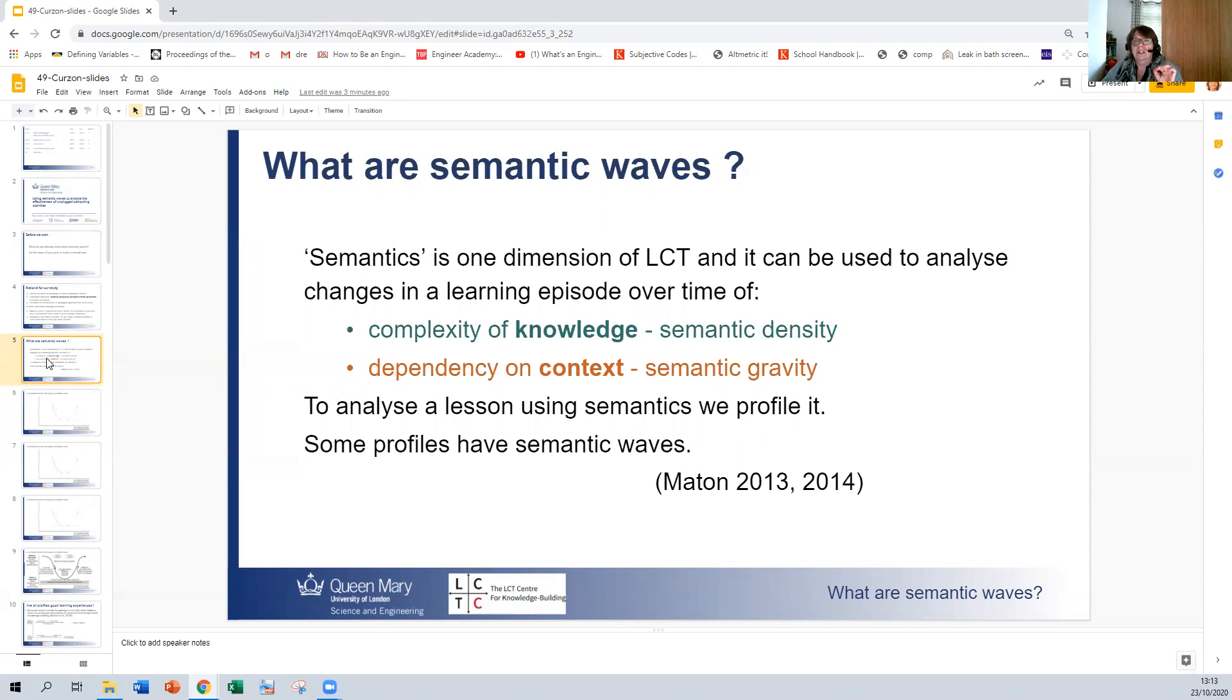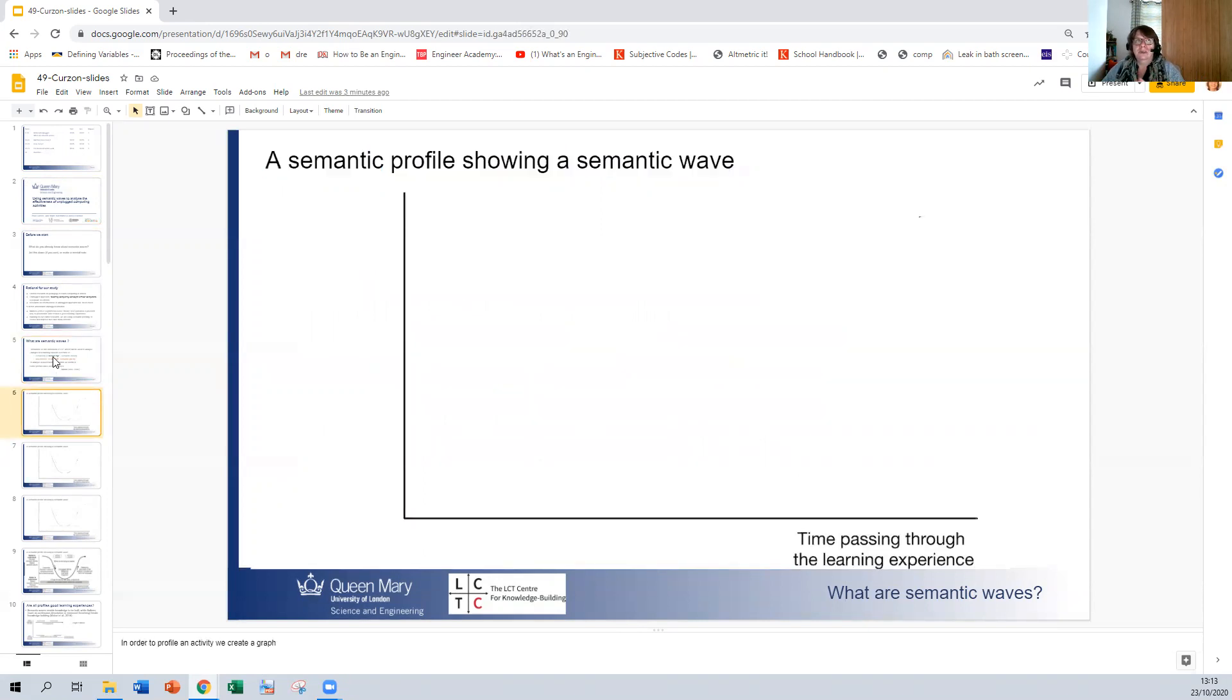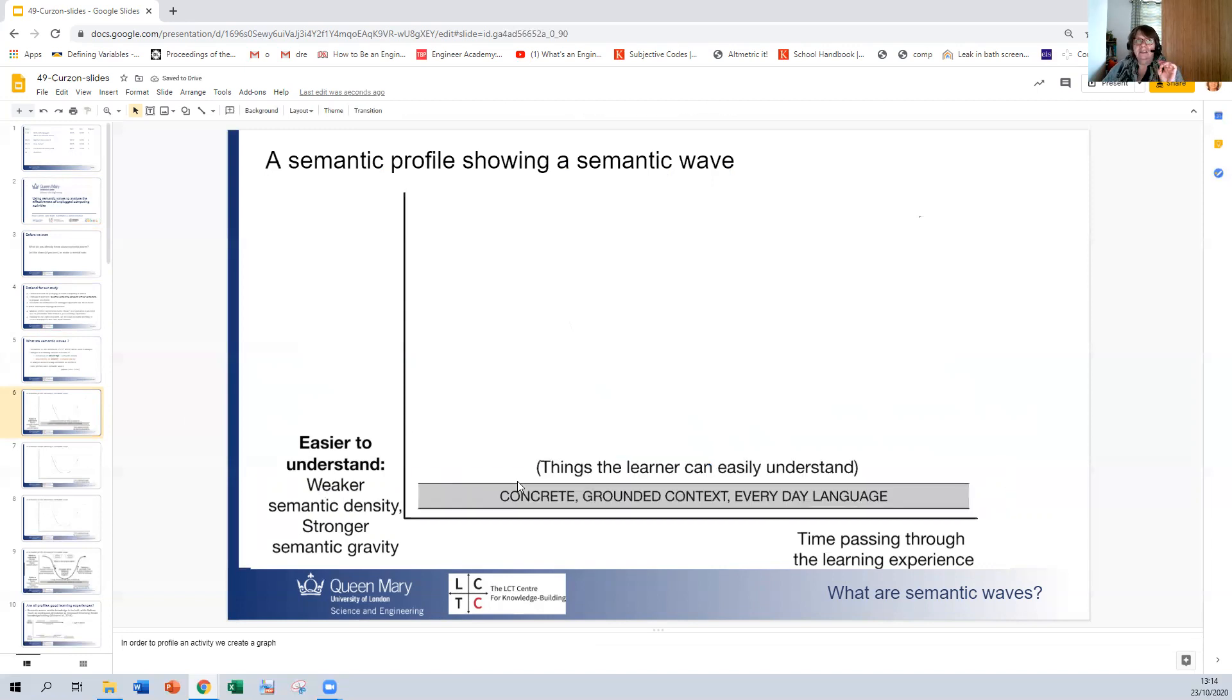So to analyze a lesson using semantics, we profile it. And some profiles have got waves and some profiles don't have waves. So I'm going to build up a semantic profile from a blank sheet. So we have a graph and we have time passing along for the learning experience. If I were to place an activity on the profile at the bottom, what that would mean is that it was easier to understand because it had weaker semantic density and stronger semantic gravity.